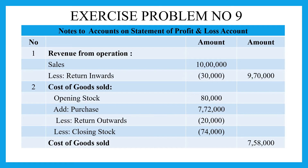Next is other income. But in this problem, we don't have any other income, so I didn't mention that separately. However, if your professor requires it, you can include an other income heading.